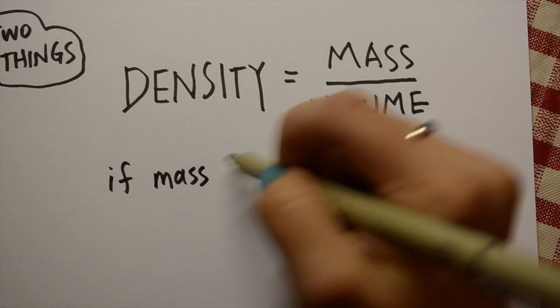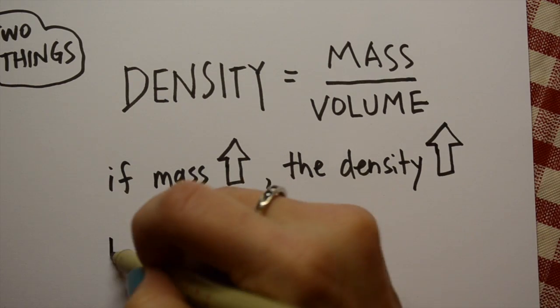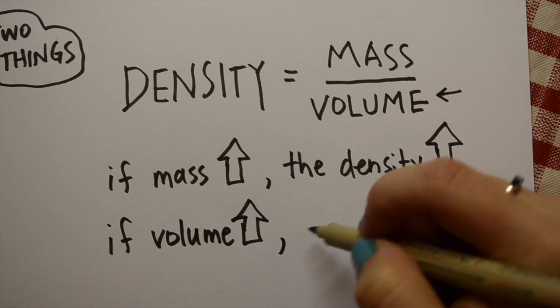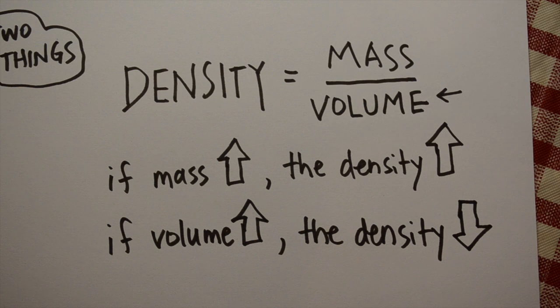This equation tells us that if the mass increases, the density will also increase. On the other hand, if the volume increases, since it's down here in the denominator, the density will decrease. Got that?